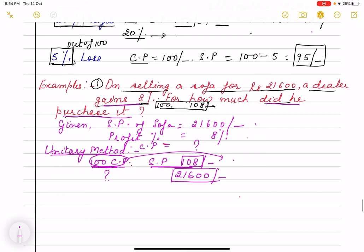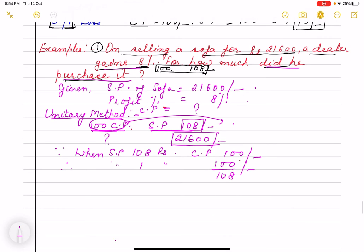So I will write first that when SP is 108 rupees our CP is 100 rupees. So I will write first that when SP is 108, in unitary method we always find out of one, so it is 100 by 108.